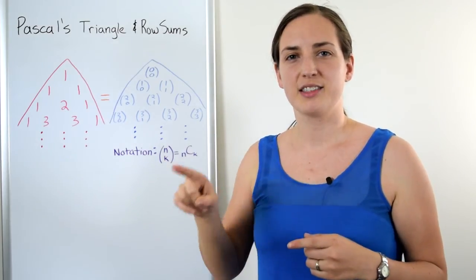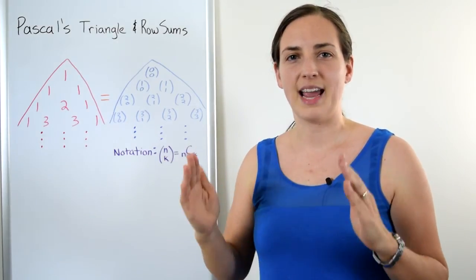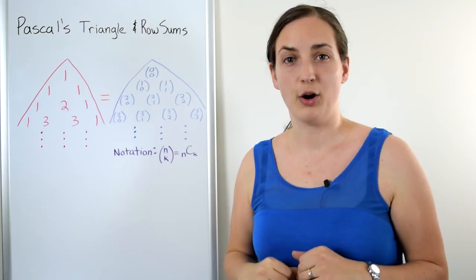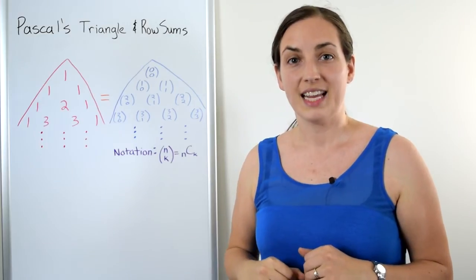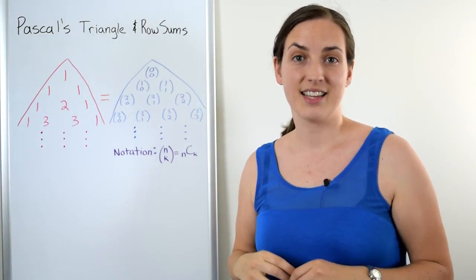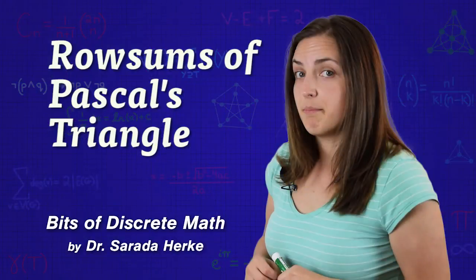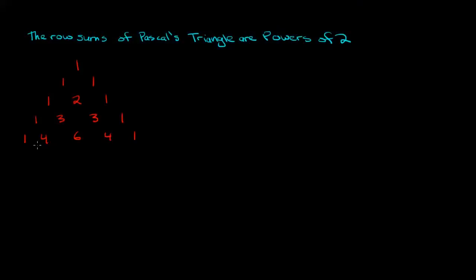Did you ever notice that if you take the sum along any row in Pascal's Triangle, you'll get a power of two? In this video we'll prove to you why that's the case. Here I've drawn the first five rows of Pascal's Triangle. The first row, which we can think of as row zero, has a sum of only one element, so it's just one.